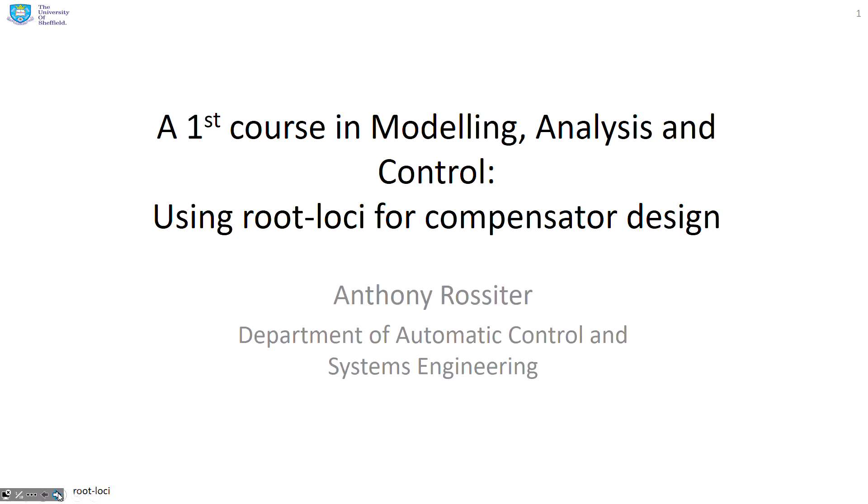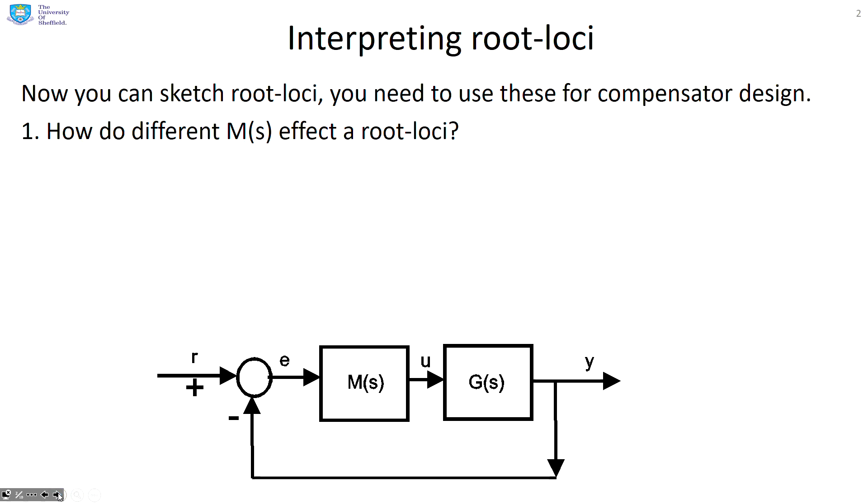We are now going to look at using root loci for compensator design. So we've learned how to sketch root loci and we know, roughly speaking, how different compensators affect the root loci. And the questions we want to ask next are: what gain should I choose and what poles and zeros might I add in my compensator?